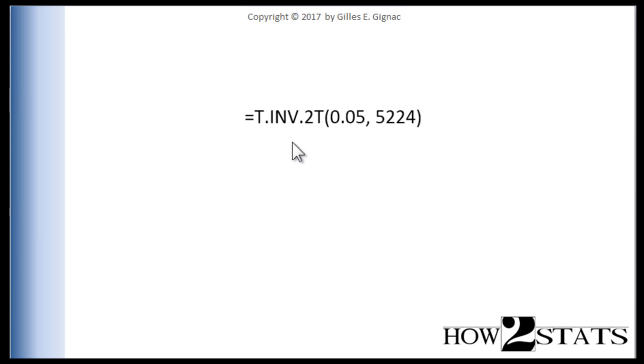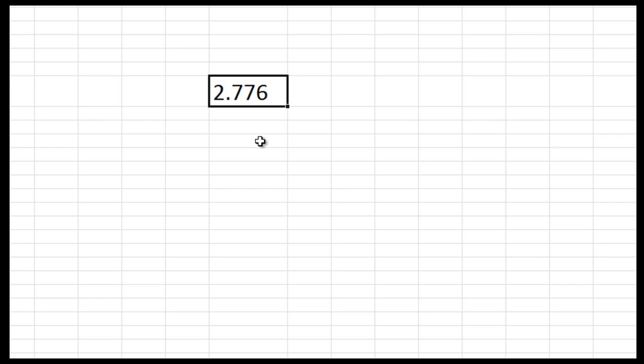So it's really splitting the .05 in half. And I used exactly the same procedure that I did for the previous video, where I can write equals t inv 2t .05 and then degrees of freedom, which is always N minus 1. So in this case here that's 5,224.